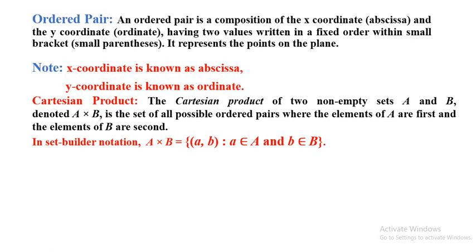Then A×B defines the set of ordered pairs. We can write A×B = {(a, b) : a belongs to the first set A and b belongs to the second set B}. For B×A, a belongs from set B and b belongs from set A, meaning the element of B comes in the first component and the element of A is in the second component.